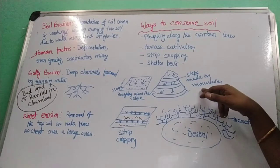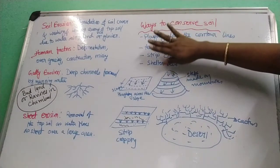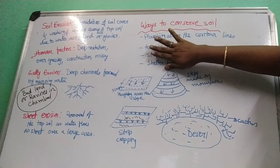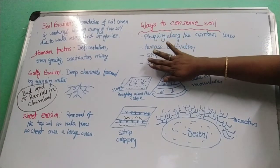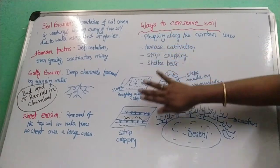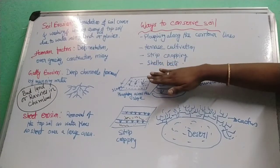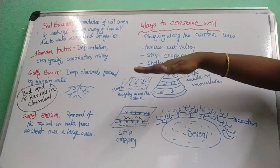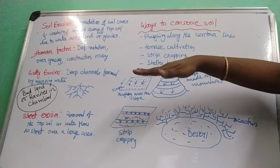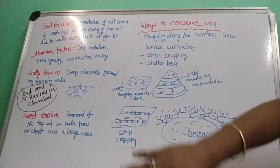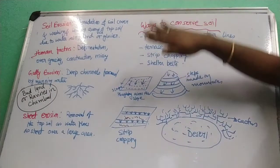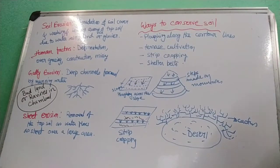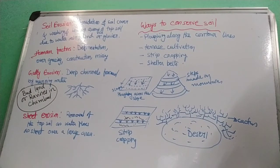Third is terrace cultivation — steps made on mountain slopes. When it rains, the water flows down but each terrace step catches the soil. The soil sediments on each terrace level, and in this way the washing away of soil from the mountain is prevented. This is known as step cultivation.